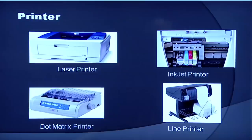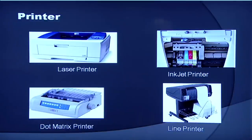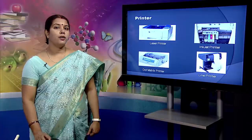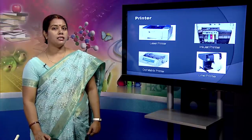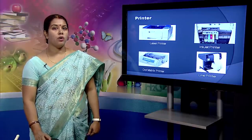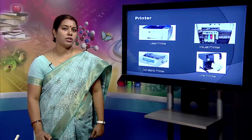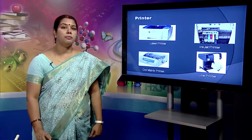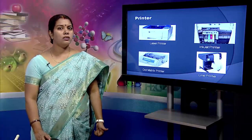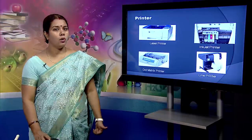The dot matrix printer is the oldest type and one type of impact printer. It is versatile and inexpensive. In a dot matrix printer, the print head physically hits the paper through the ribbon and produces text or images by combination of dots. Its speed is measured in characters per second. Although it is less expensive, it is louder, slower and produces lower quality print.